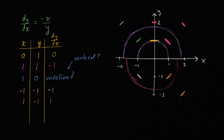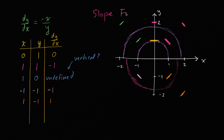So this field that I'm creating — where I'm sampling a bunch of points and visualizing the slope with a line segment — this is called a slope field. Hopefully that gives you the basic idea of what a slope field is. In the next few videos, we'll explore this idea even deeper.